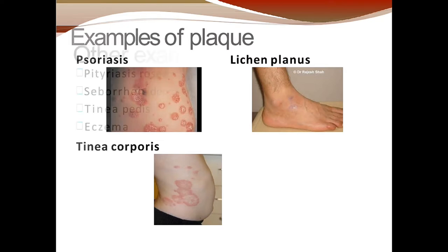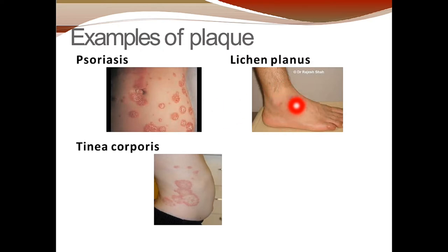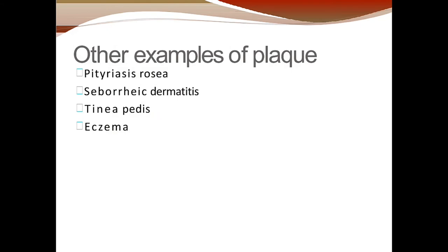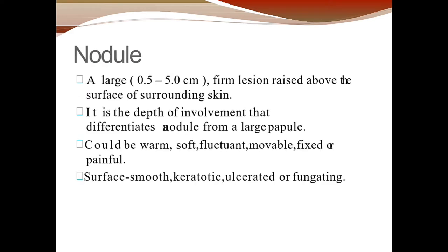Plaque is a hardened lesion. Examples include psoriasis and lichen planus, both of which involve hardening of the lesion, and tinea corporis. The diameter is greater than 0.5 centimeter. Other examples of plaques are pityriasis rosea, seborrheic dermatosis, tinea pedis, and eczema.